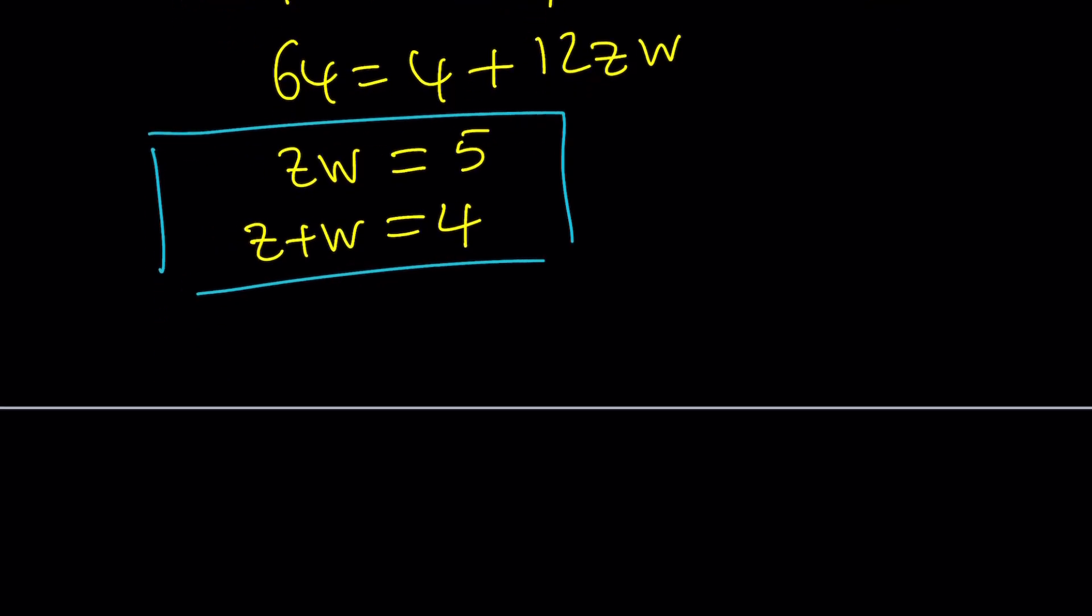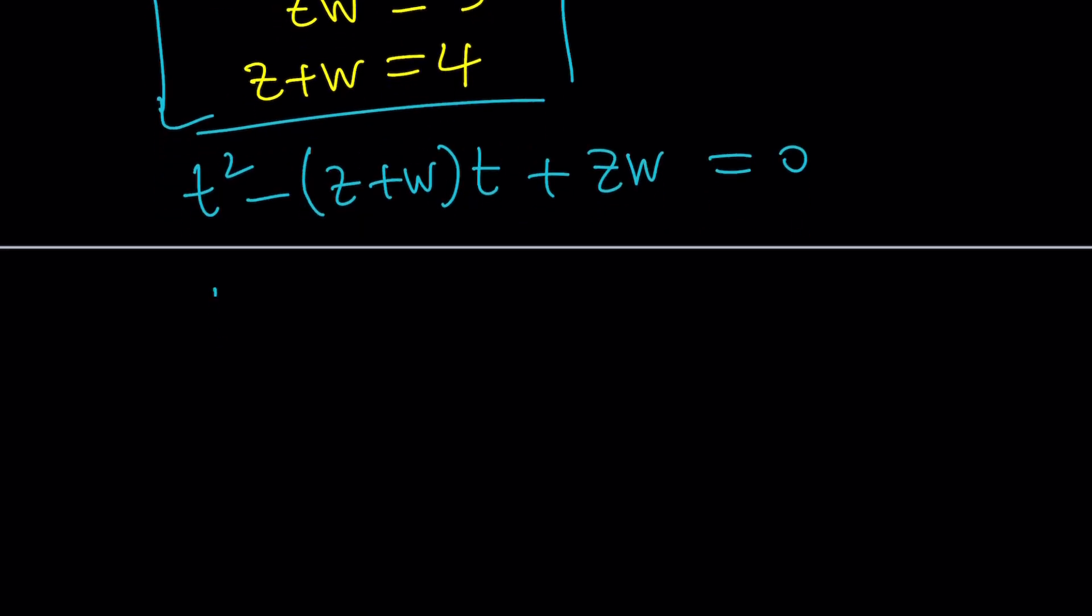And by using Vieta's formulas, we can actually come up with an equation. Vieta's formulas basically give us an equation whose sum of roots, product of roots and all those combinations are given. So in this case, I'm going to write it like this. T squared minus z plus w T plus zw equals 0. That's going to be my equation from these roots. And z plus w is 4. So it's going to be T squared minus 4T plus 5 equals 0. And as you know, the solutions to this quadratic are 2 plus i and 2 minus i.